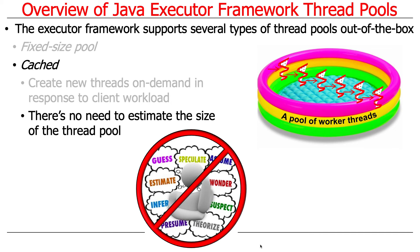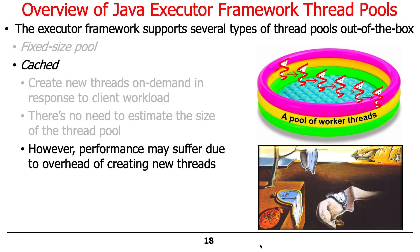One nice thing about cached thread pools is there's no need to estimate pool size — threads are spawned dynamically until you max out, and the maximum is Integer.MAX_VALUE, roughly two billion. If you end up spawning two billion threads, you have bigger problems. The downside is that during periods of bursty traffic, you can have lots of threads created, ending up with roughly the same problem as a thread-per-client model. That might not be the best approach if you have bursty traffic you want to carefully mediate.